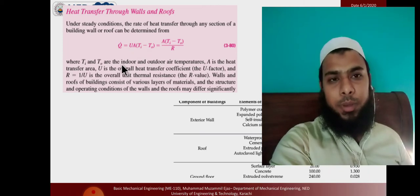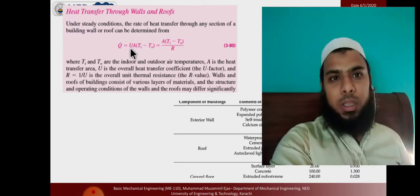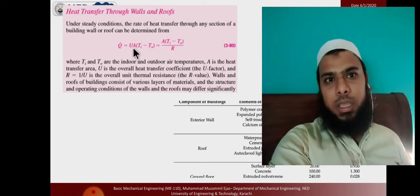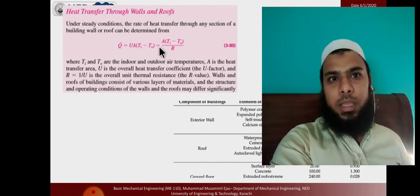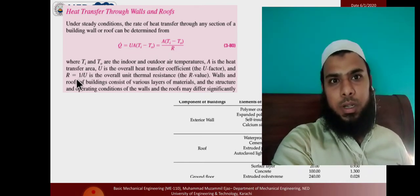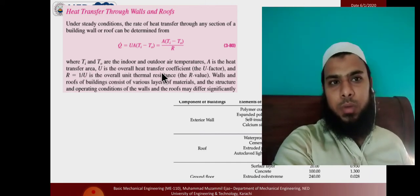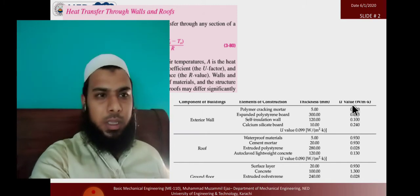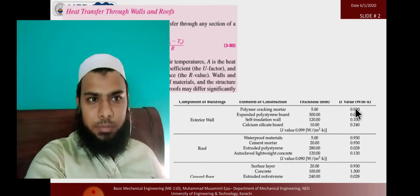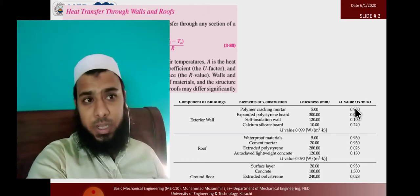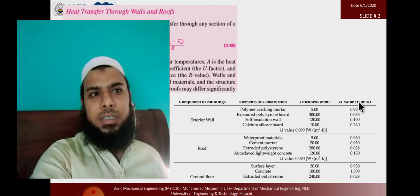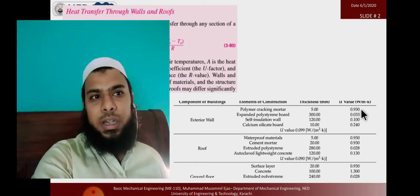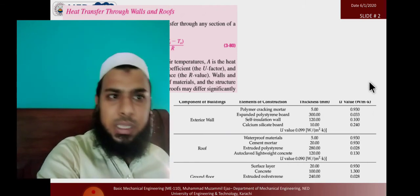The resistance formula for conduction becomes L over K, and for convection it becomes 1 over H, since area is not included in the resistance. For the overall heat transfer coefficient, 1 over R equals U, so R = 1/U or U = 1/R. Most construction materials are differentiated by their U-value — when building homes or any building, you will encounter material properties expressed as U-values. The U-value encompasses the overall heat transfer coefficient, which includes conduction, convection, and radiation.